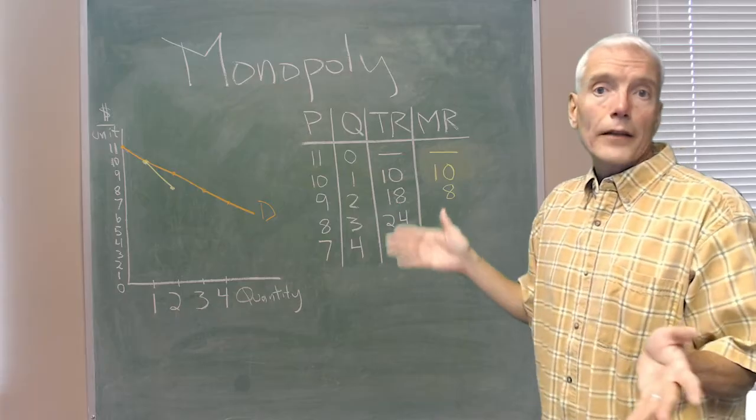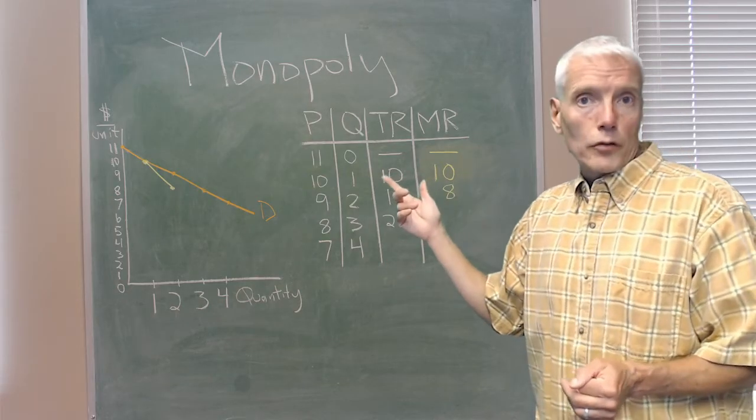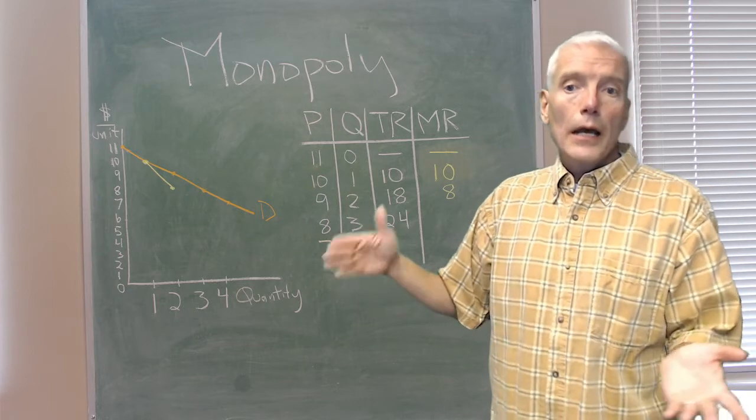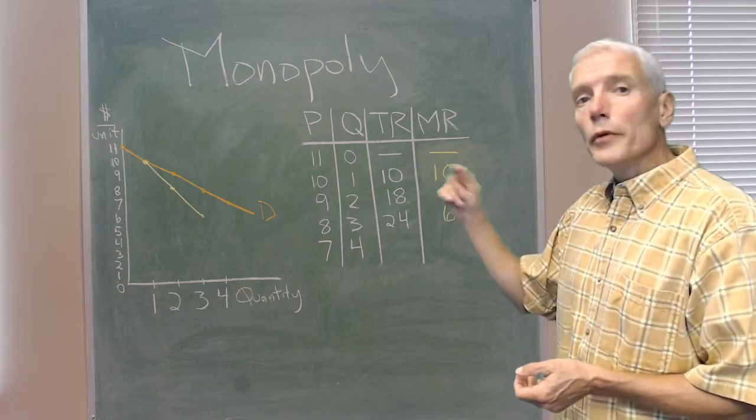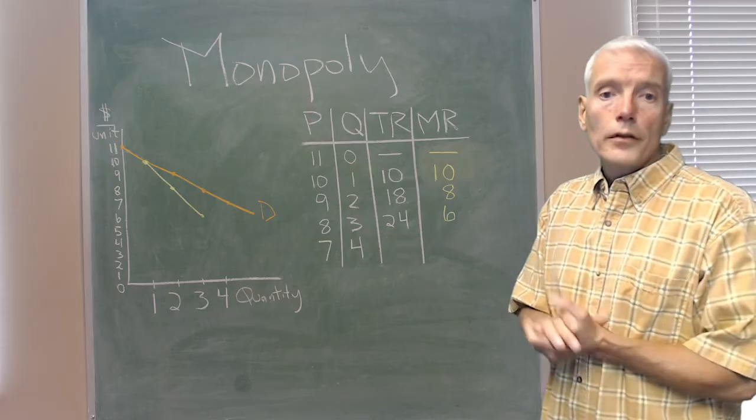Or we can look at the total revenue of $24 minus the total revenue from selling only 2, which is $18, and the increment is $6. So marginal revenue, either way you count it, is $6.